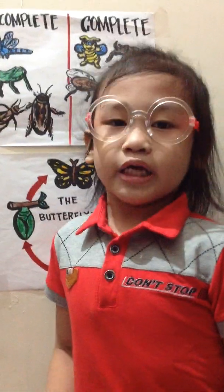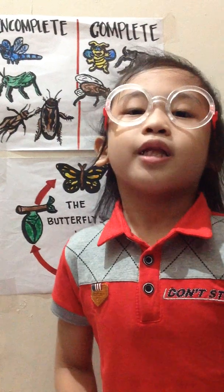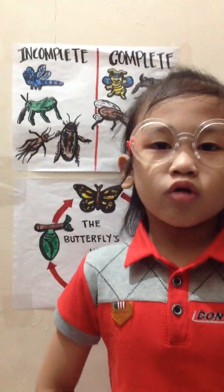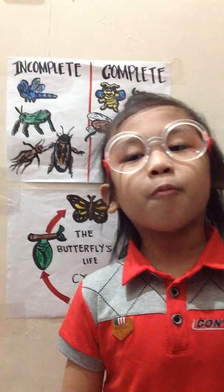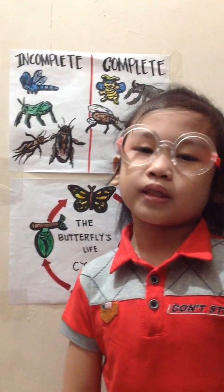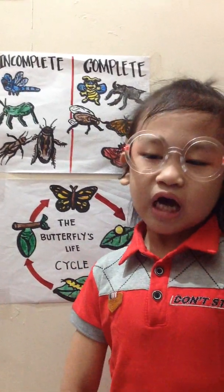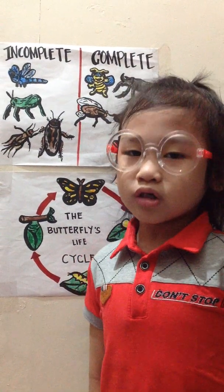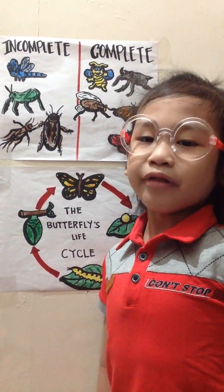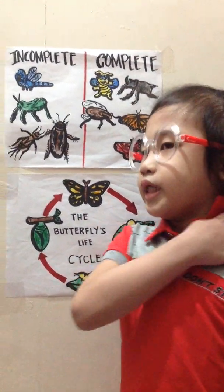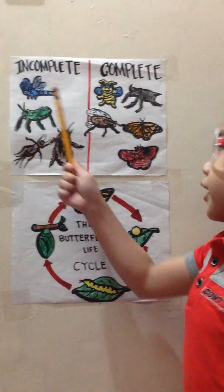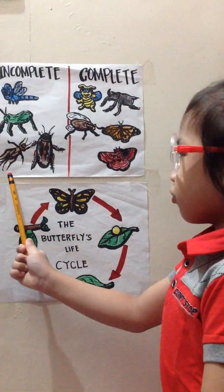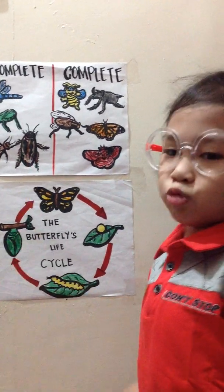These are incomplete and complete. For incomplete metamorphosis, the young is called nymph. The young looks similar to adult. Examples: Dragonfly, Grasshopper, Crickets, Cockroach.